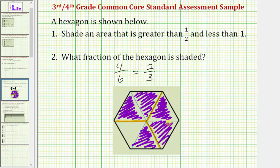Notice how if we shade another piece here, now we have one, two, three, four, five, six pieces shaded, which is still greater than one-half and less than one.